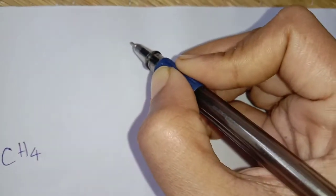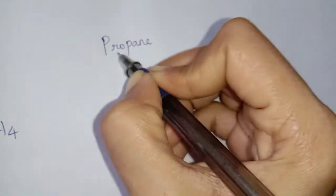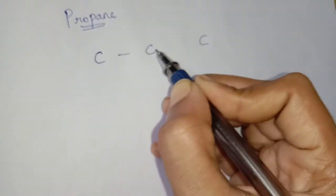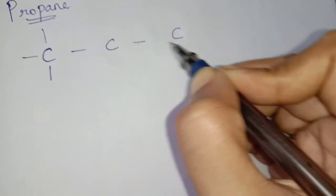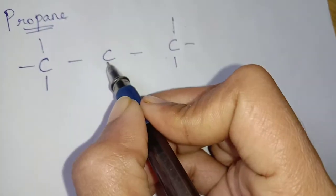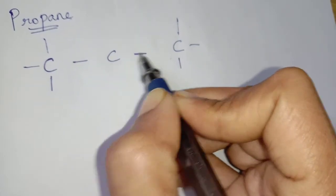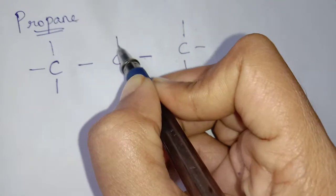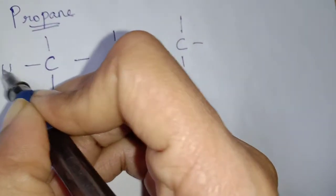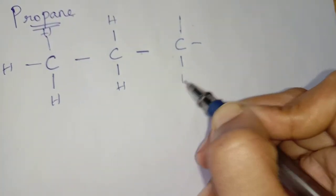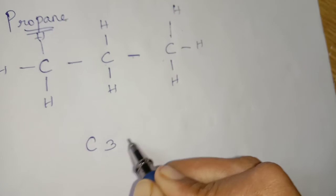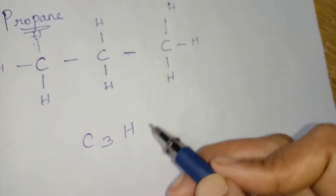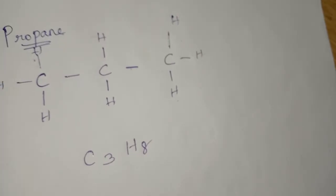Next, propane. Propane means how many carbon atoms have to be present? 3 carbon atoms — 1, 2, and 3. The end carbons are each connected to one other carbon, so balance 3 bonds remain for hydrogen. But for the central carbon atom, already 2 bonds are used, so we write balance 2 hydrogen. Counting all hydrogen: 1, 2, 3, 4, 5, 6, 7, 8. So like that we can write the formula for propane as C3H8.